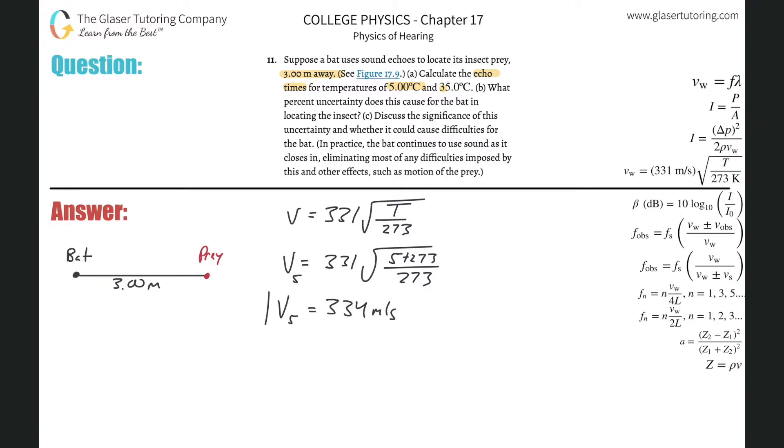Now we're going to do the same thing for the velocity of sound at 35 degrees Celsius. So this is going to be equal to 331 multiplied by the square root of now 35 plus the 273 all divided by 273. The velocity of sound at 35 degrees Celsius will equal 331 times the square root of 35 plus 273 divided by 273, which is 352 meters per second. When I do my calculation, I'm going to use exact values moving forward.